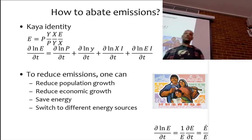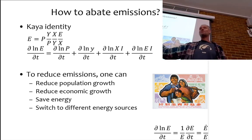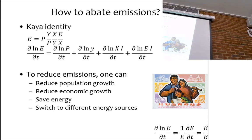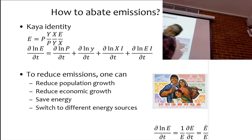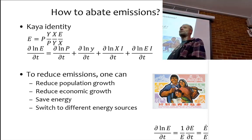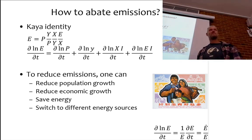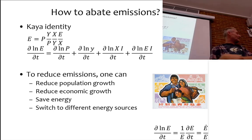If you take the log on both sides of the equation — because the log of something is equal to the log of the same thing — that multiplication turns into an addition. And if you take the first partial derivative with respect to time, it's still true, because we apply identical operations to something identical.